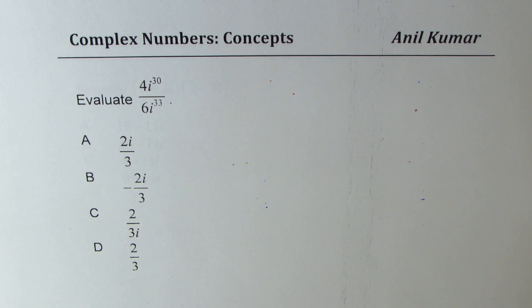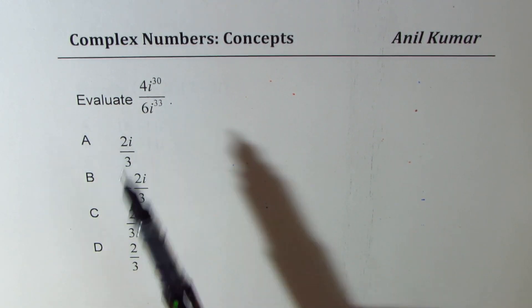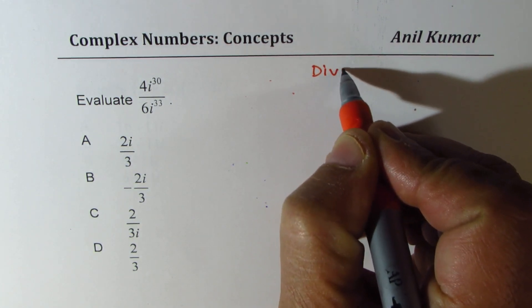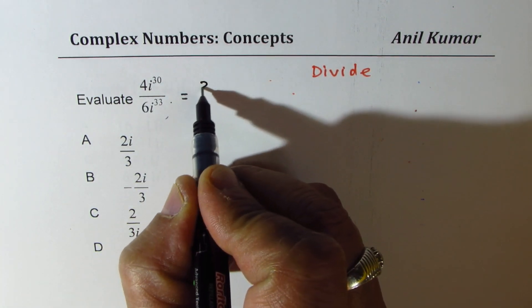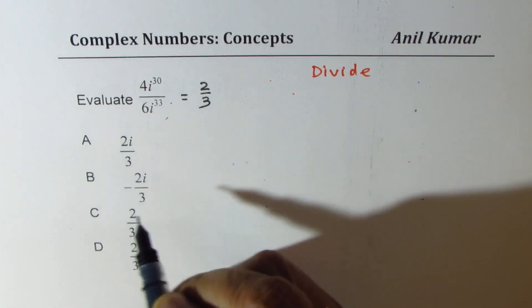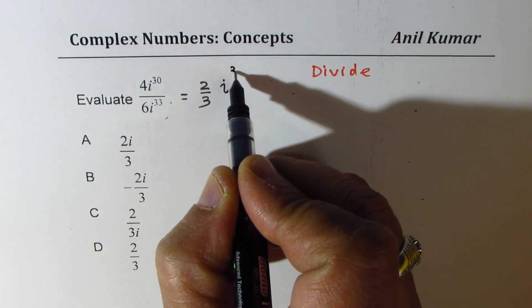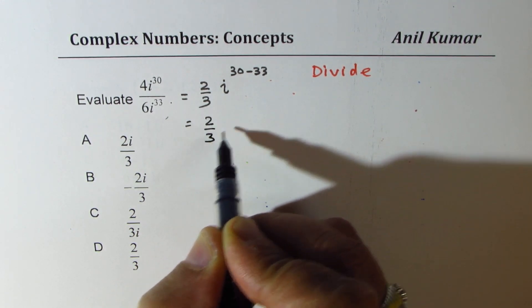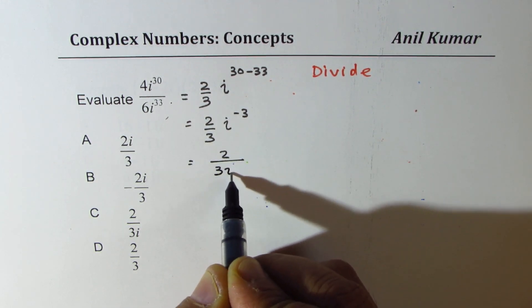This time we'll evaluate 4i to the power of 30 divided by 6i to the power of 33. So we'll learn how to divide these complex numbers. We'll apply the normal rules. We can simplify this as 2 over 3 and i to the power of 30 minus 33.